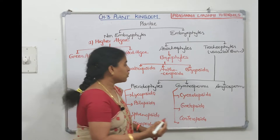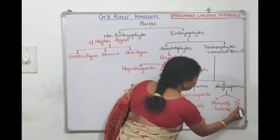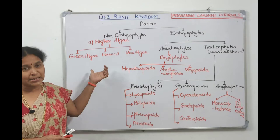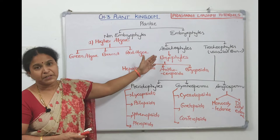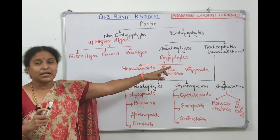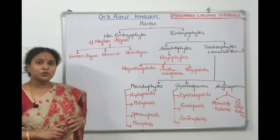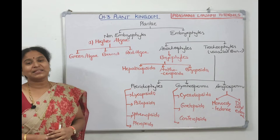To summarize the broad classification: non-embryophytes include algae (three classes: green, brown, red algae). Embryophytes without vascular bundles are bryophytes (three classes: Hepaticopsida, Anthocerotopsida, Bryopsida). Tracheophytes include pteridophytes (four classes: Psilopsida, Lycopsida, Sphenopsida, Pteropsida), gymnosperms (three classes: Cycadopsida, Gnetopsida, Coniferopsida), and angiosperms (two classes: Monocotyledons, Dicotyledons).